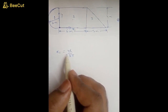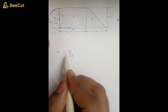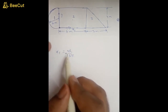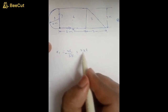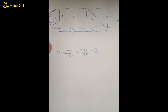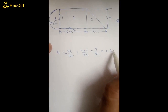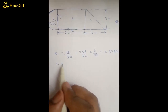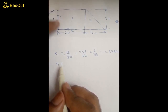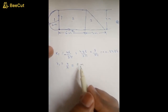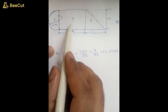Since the semicircle is on the opposite side of the x-axis, it will be in the negative direction, so x1 is minus 4r upon 3 pi. Substituting r equals 2: x1 equals minus 8 upon 3 pi, which gives approximately minus 0.8488 meters. For y1, because the shape is symmetrical about the x-axis, y1 will be half the diameter: 4 by 2 equals 2 meters.